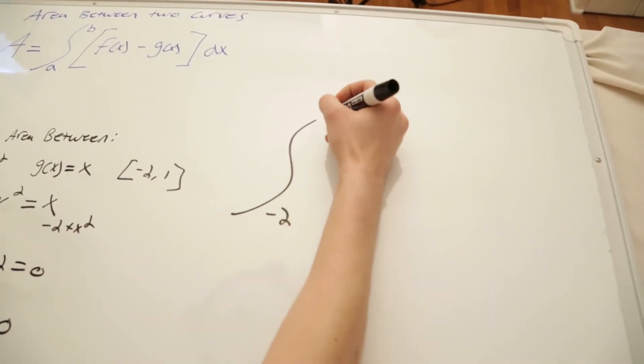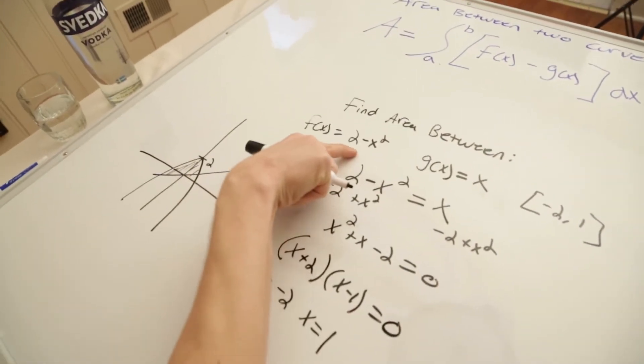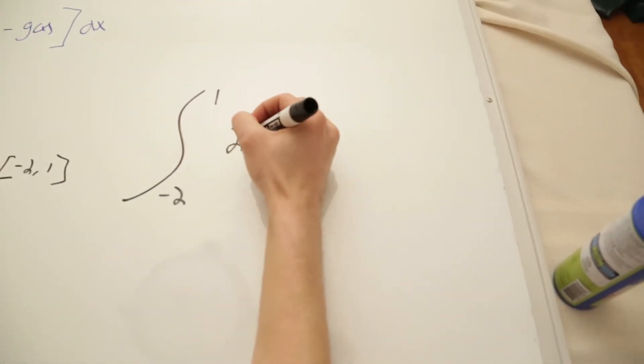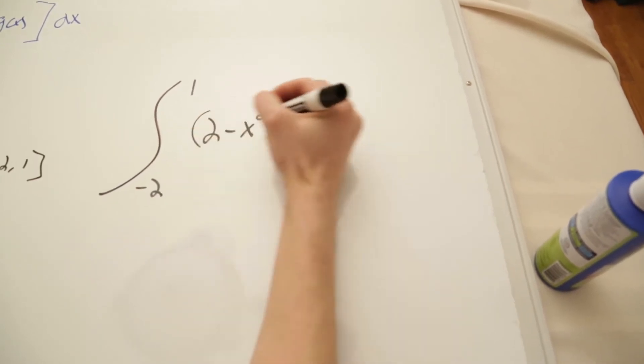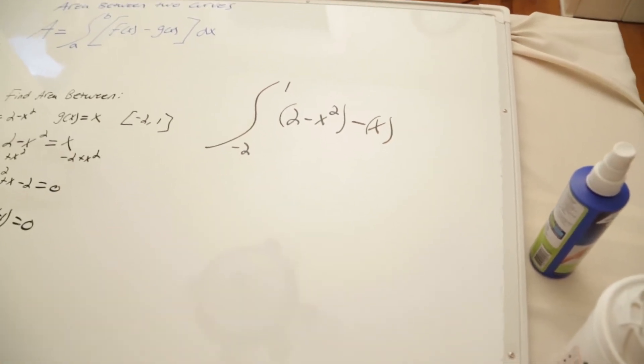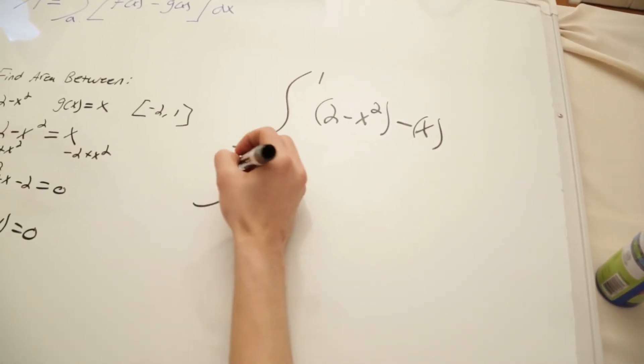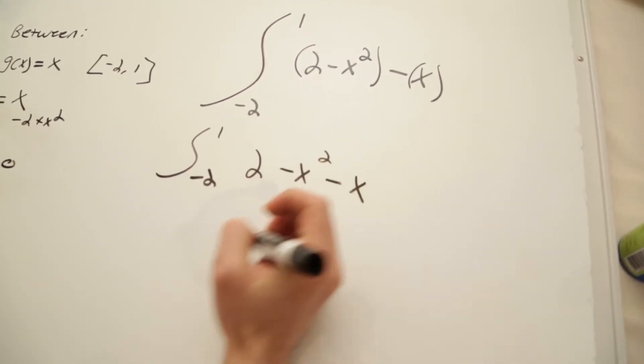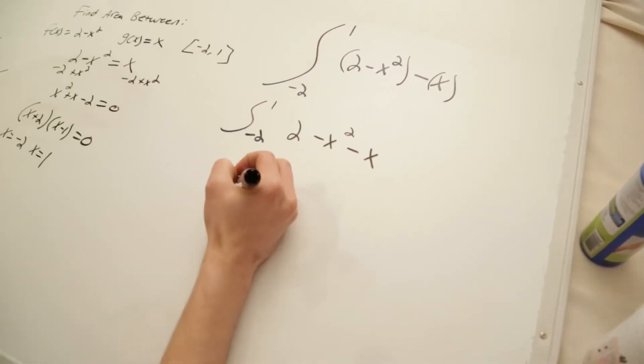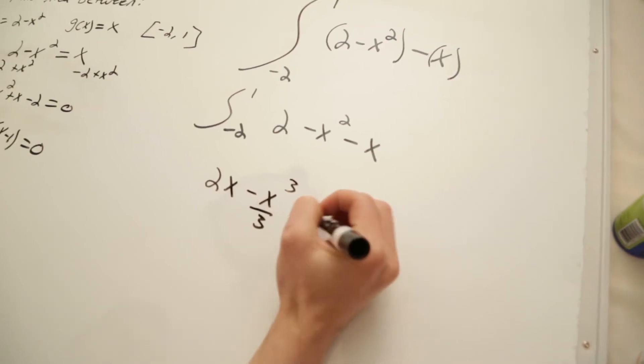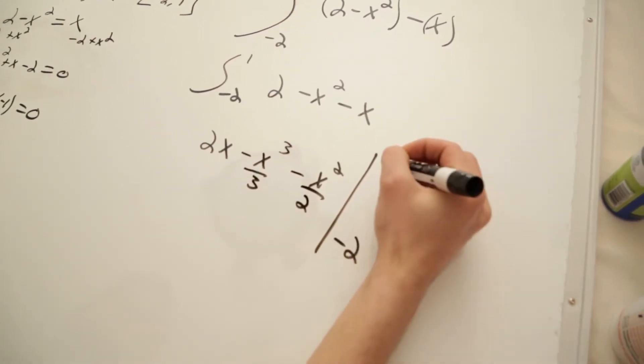All right, so now we can set up this integral. So we have the integral from negative two to one. Our top curve is going to be the two minus x squared because it's on top. We'll have two minus x squared minus x. So we can rewrite this as negative two to one of two minus x squared minus x. Just integrate normally. We'll get two x minus x cubed over three minus x squared over two from negative two to one.